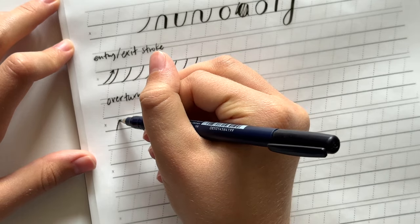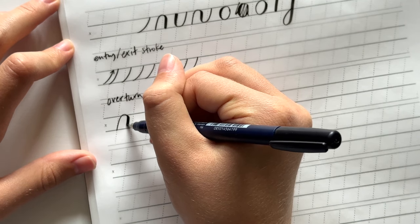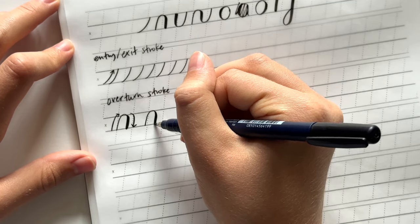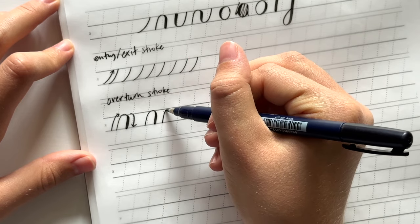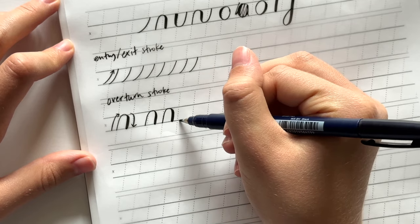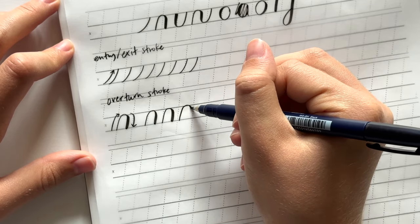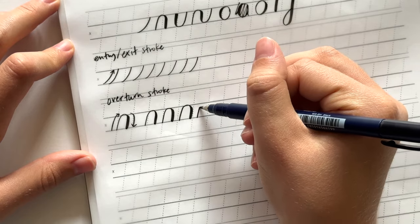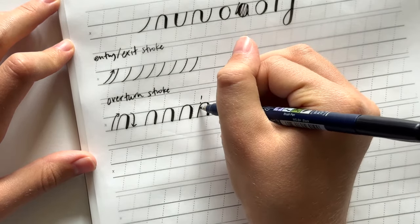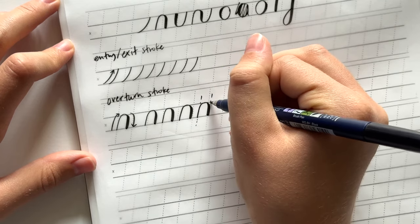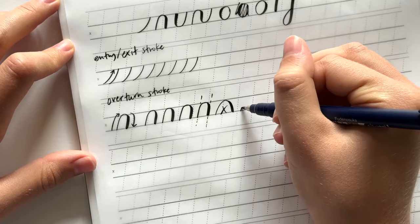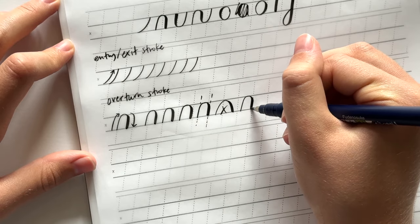Next stroke is the overturn stroke. So this is like an upside-down U-shape. We come up here and then down on the other side with heavy pressure. The goal is to keep these two lines parallel. So you don't just want to do something like this. Instead you want to keep the two sides of the stroke parallel.